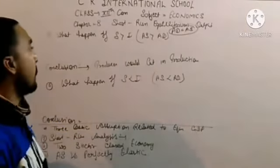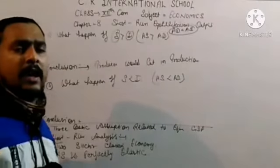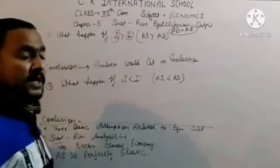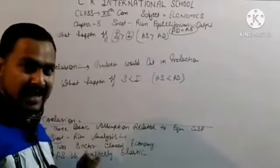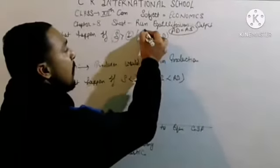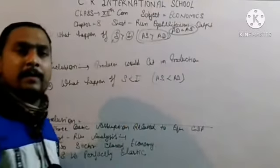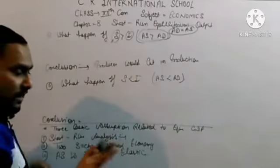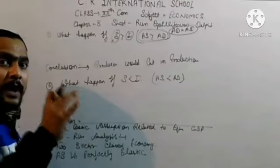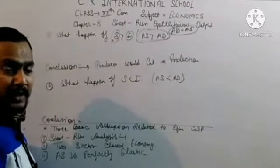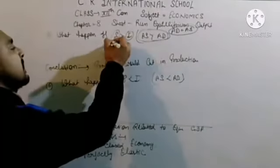Next topic: what happens if equilibrium is disturbed? What happens if S is more than I - saving is more than investment? Fall in expenditure through saving is more than the rise in expenditure through investment. This is the same case as AS greater than AD. Saving is a part of income not spent; when people save more, they spend less, so demand falls.